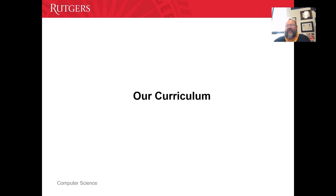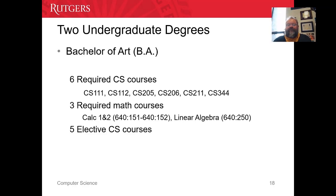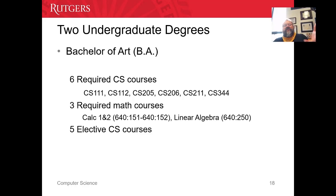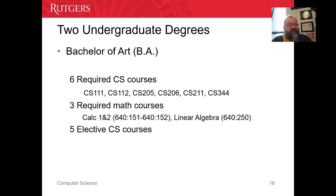When it comes to the computer science curriculum, it basically goes like this. You have the Bachelor of Arts degree and the Bachelor of Science degree. For the Bachelor of Arts, you have to take six required CS courses: CS 111 is Intro to Computer Science; CS 112 is Data Structures; CS 205 is Discrete Structures, which is really Discrete Mathematics 1; CS 206 is Discrete Structures 2; CS 211 is Computer Architecture; and CS 344 is Algorithms.